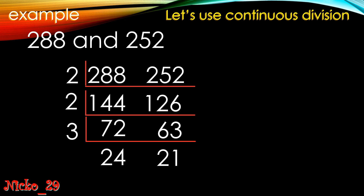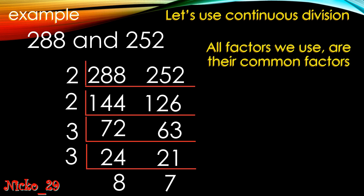24 and 21 are still multiples of 3, so we divide by 3 again and get 8 and 7. Now 8 and 7 are called relatively prime — 8 is composite and 7 is prime, but they cannot be divided by any common factor. So continuous division stops here.